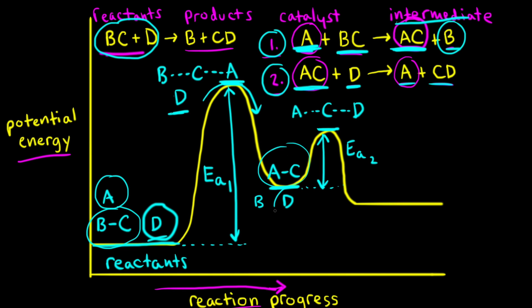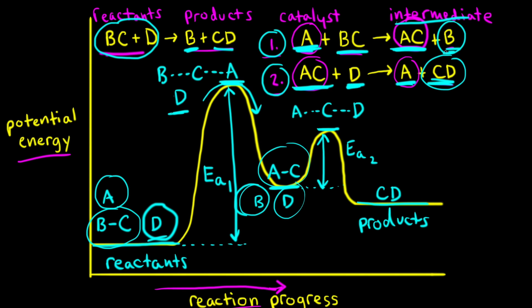AC and D must collide with enough kinetic energy to overcome the activation energy for this second step. If they collide with enough kinetic energy, we would produce A and CD. This line at the end represents the energy level of our products: CD is one product, and B is our other product formed in the first step, so we write B plus CD. We also reformed our catalyst, so A is present here as well.